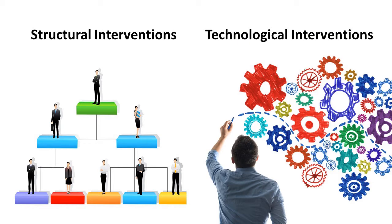Structural interventions make changes to the division of labor, reporting relationships, and workflow. We might redistribute or outsource job responsibilities. Technological interventions make changes to tools, equipment, and information processing systems. We could change the ergonomic design of workspaces or implement a paperless inventory system.